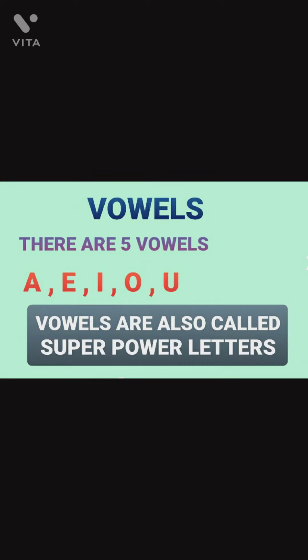Exactly, what are vowels? There are 5 vowels, those are A, E, I, O, and U. We can say that Y is a vowel, but it's also a consonant.